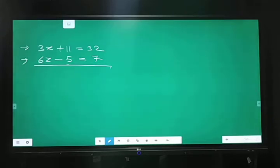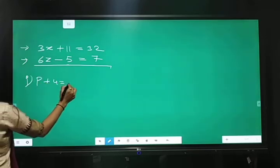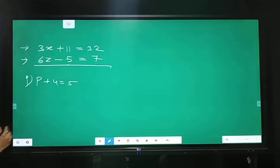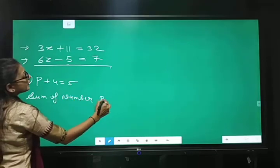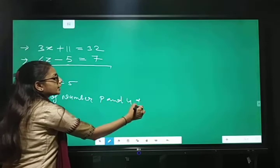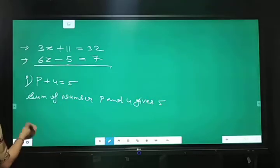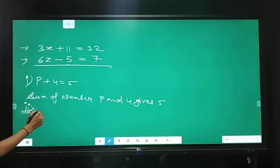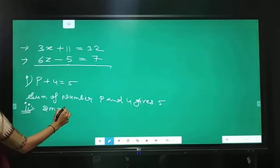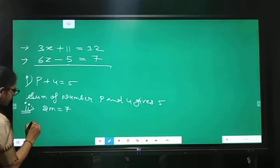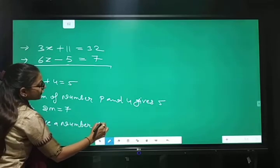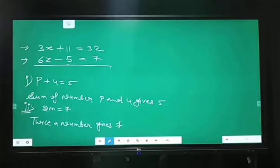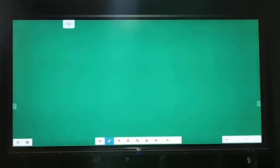Aur ager aapke paas equation hai usko statement mein kaisi change karenge. Toh first equation is p plus 4 equal 5. We can write sum of a number, p and 4 gives 5. One more example is 2m equal 7. We can write twice a number gives 7. Okay?